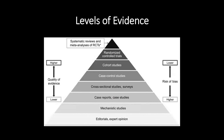When looking for evidence, we also consider the levels of evidence. We have the evidence pyramid, which tells you the rigor of the evidence. The higher up on the pyramid you go, the higher quality of evidence and the lower risk of bias. The best evidence is systematic reviews and meta-analysis of randomized controlled trials, followed by randomized controlled trials, then cohort studies, case control studies, cross-sectional studies and surveys, case reports and case studies, mechanistic studies, and finally editorials or expert opinion.